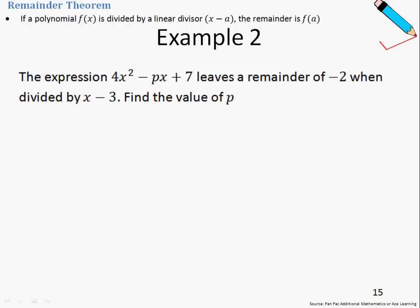So in Example 2, the question says that the expression 4x²-px+7 leaves a remainder of -2 when divided by x-3. Find the value of p. The first thing I'm going to do is give a name to this expression, so let's just call it f(x).